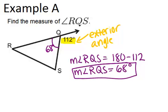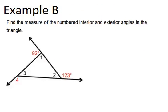Let's look at example B. Find the measure of the numbered interior and exterior angles in the triangle.